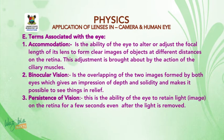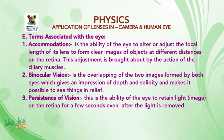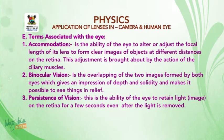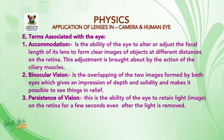Now let's take some terms associated with the eye. Number one: accommodation. It is the ability of the eye to alter or adjust the focal length of its lens to form clear images of objects at different distances on the retina. This adjustment is brought about by the action of the ciliary muscles.